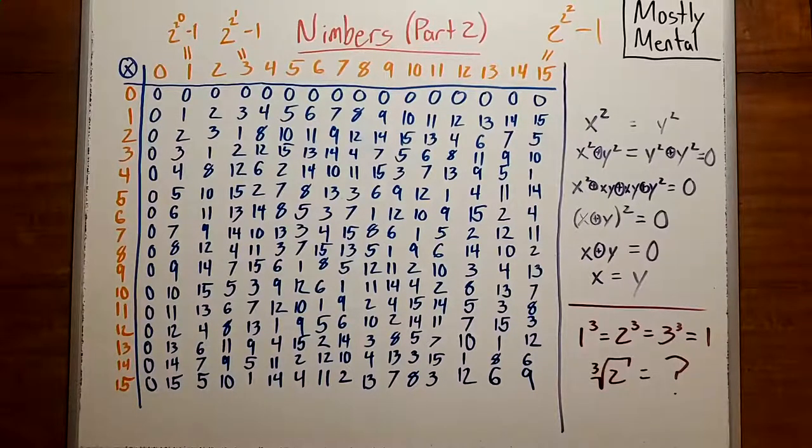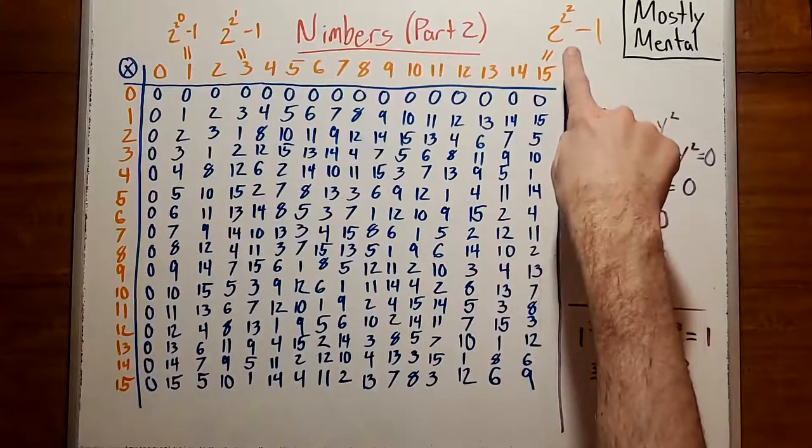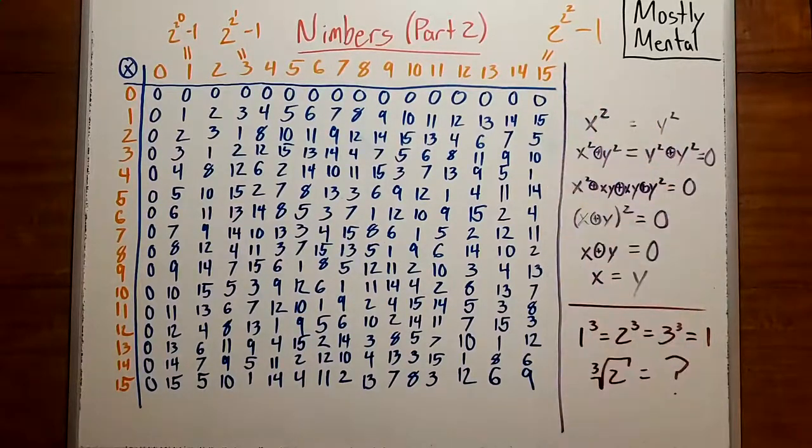And as we saw a moment ago, there's a size limit on multiplication. So there must be the same number of squares and nimbers below 2 to the 2 to the n, which means every nimber must be a square, and the square of something different. And that means we can take square roots.